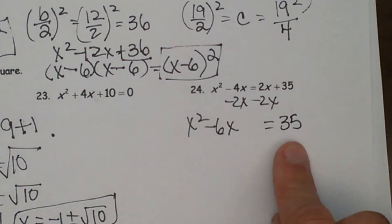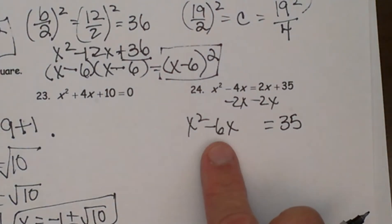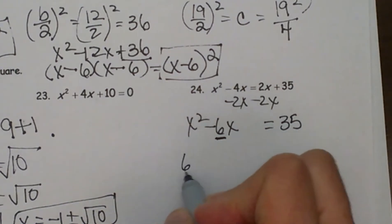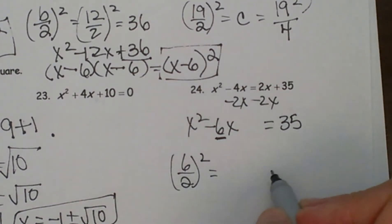Now I am going to complete the square by taking the b term and halving it and squaring it. So I am going to take 6 and I am going to half it and square it and then I am going to add it to both sides.